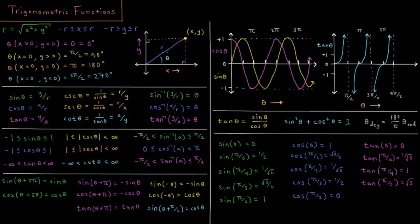What is r in terms of x and y? Through the Pythagorean Theorem, r is going to be the square root of x squared plus y squared.